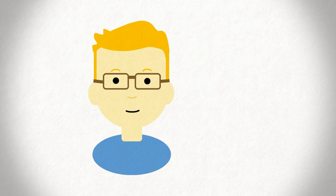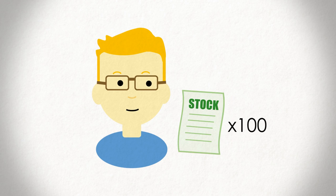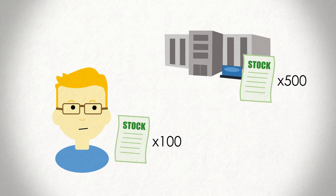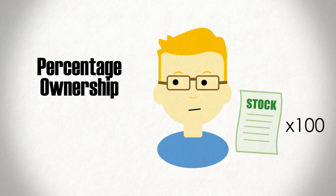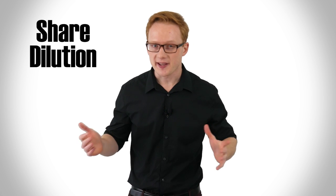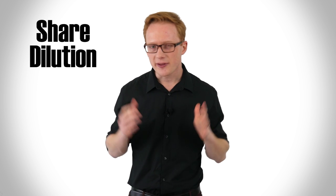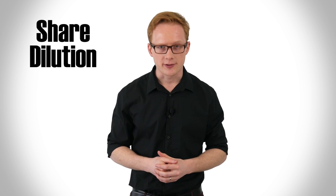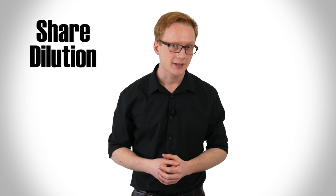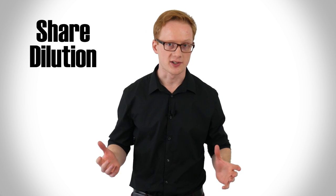This increases the number of shares outstanding and effectively reduces how much of the company each share represents. With our example, if after you purchase your 100 shares, the company issues another 500 shares, then your percentage ownership would be reduced from 10% to 6.7%. This is share dilution, something that occurs when a company issues shares in addition to what's already outstanding. And while the average person may not care about their shares losing voting power, it can have other negative effects on your position.